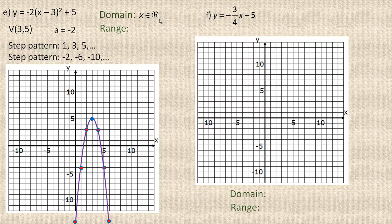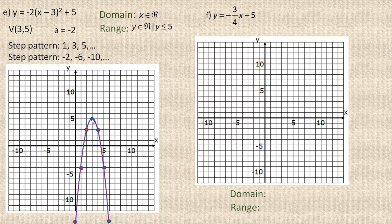The domain for a parabola that opens up or down is the entire set of real numbers, because it extends forever left and right. There's no restriction on what x can be — you can subtract 3, square it, multiply by -2, and add 5 for any x. But there is a restriction for the range: the highest y value is 5 at the vertex, so y is less than or equal to 5.